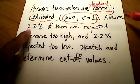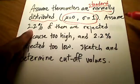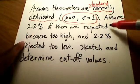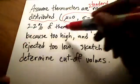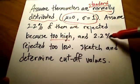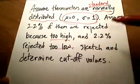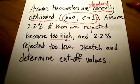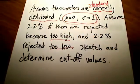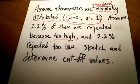They ask us to assume that 2.2% of these thermometers are rejected because they're too high, and we also have 2.2% that are rejected because they're too low. We need to sketch and determine these cutoff values, so let's start with the picture.